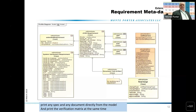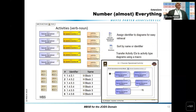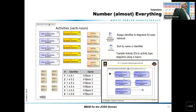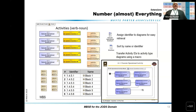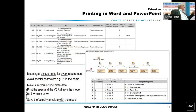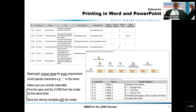Another extension we did: we want to number almost everything. What some people were doing before we made this extension was putting the number and the name together in the name of the system — all that did was make it impossible to sort by name. We like to number things, we like the number to show up in our activity diagrams, and we want to be able to assign that identifier to organize things in the containment tree. We're also able to print the spec with metadata, and we came up with a methodology to put together a PowerPoint presentation directly out of the model, using an identifiable element as a numbering tool to control the order.